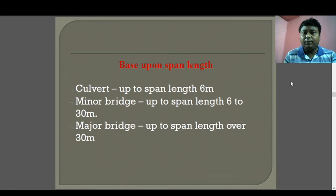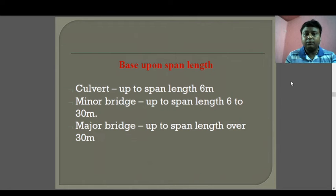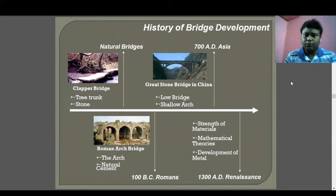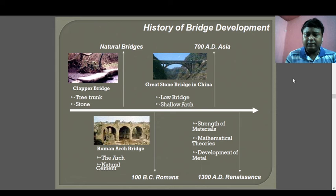Based on span length: a culvert is up to 6 meters, minor bridges are from 6 meters to 30 meters, and major bridges are over 30 meters.